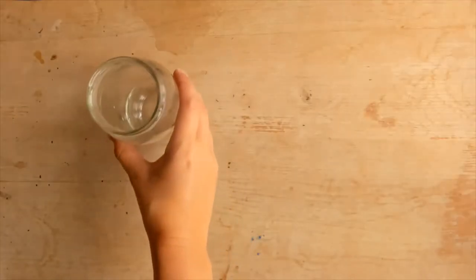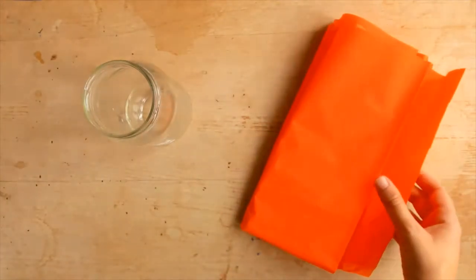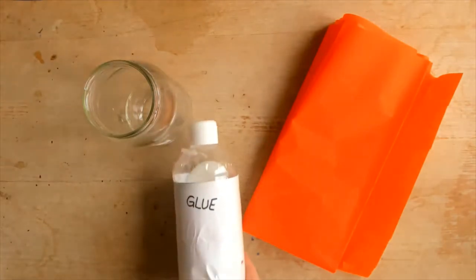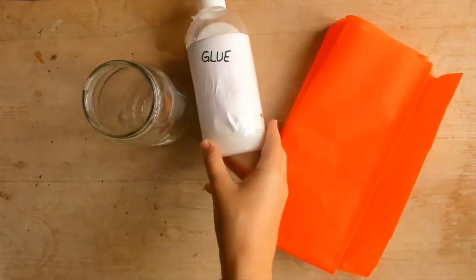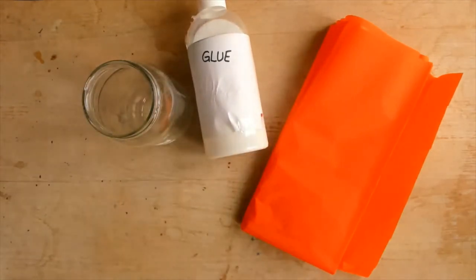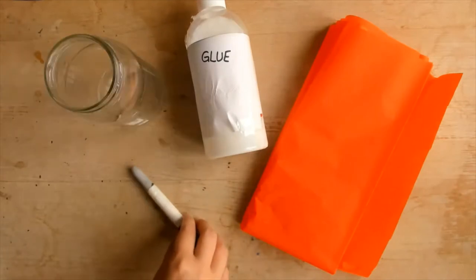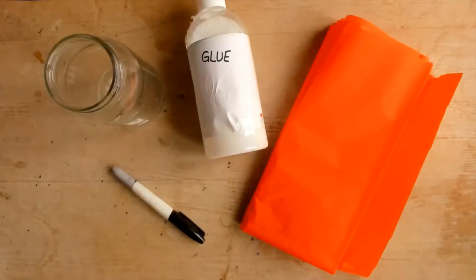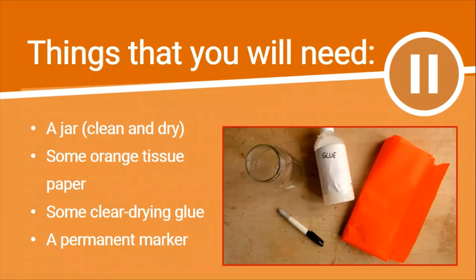Here are the things you will need: a glass jar ready to upcycle, you could also use a mason jar for this pumpkin jar craft. You will need some orange tissue paper, but you could always get creative and use a mixture of autumn colors. You will need some clear drying glue, I'm going to use PVA glue, and lastly you will need a permanent marker. Pause here while you gather your art project equipment.